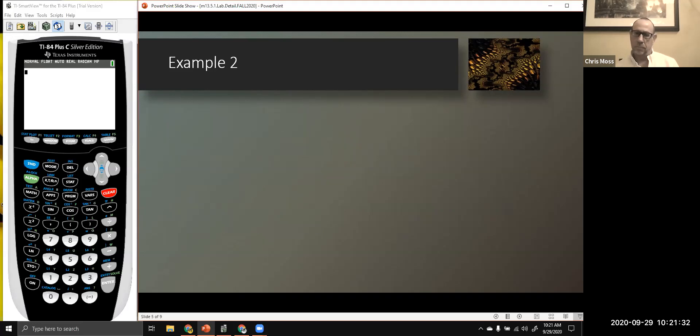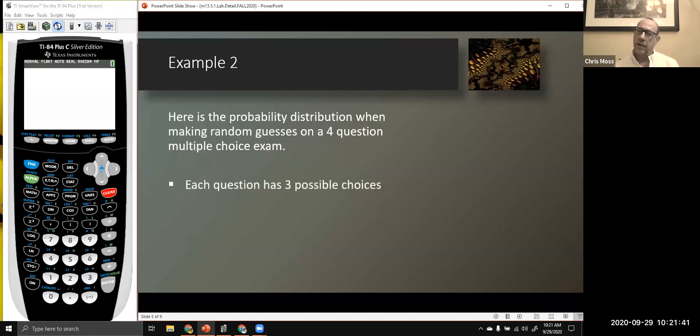Here's a second example. In this case, we have a random probability distribution. We're making random guesses on a four question multiple choice exam. Each question has three possible choices. You could pick A, you could pick B, you could pick C.